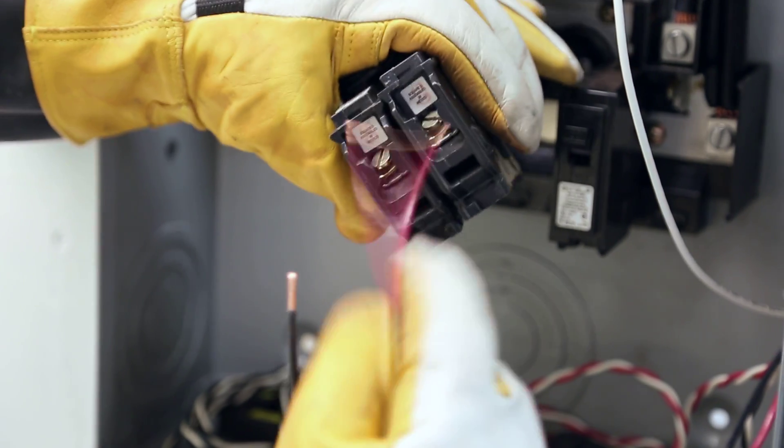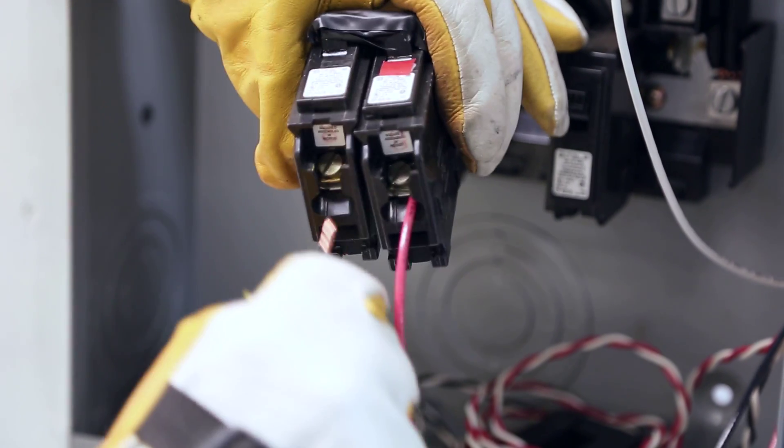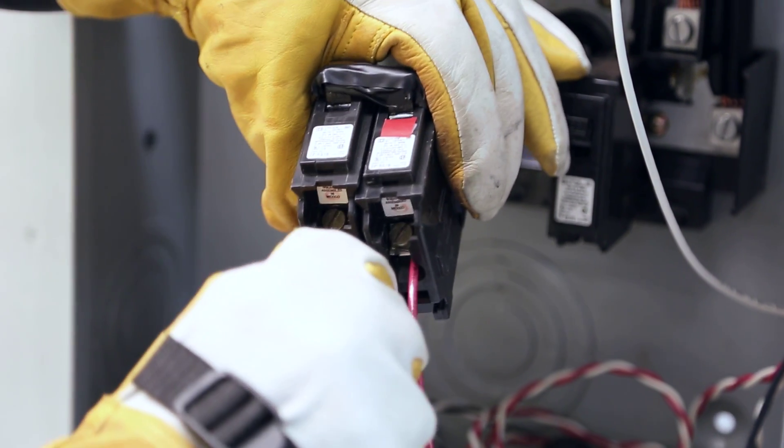Insert the wire into your breaker. Tighten it down. Obviously be aware that that's line two and then your line one go on your line one breaker.